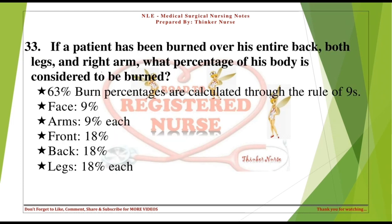If a patient has been burned over his entire back, both legs, and right arm, what percentage of his body is considered burned? 63%. Burn percentages are calculated through the rule of nines: face 9%, arms 9% each, front 18%, back 18%, legs 18% each.